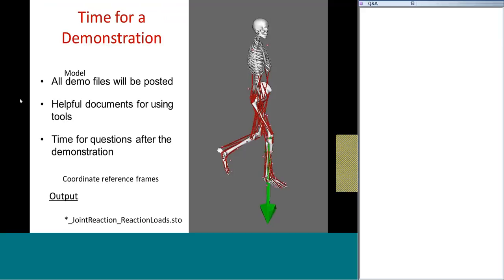I think it's time to move on with the demonstration — it's the best way to show you how to interface with joint reaction analysis. Before I start, I want to say this isn't intended as a follow-the-leader exercise. Instead, we'll post all the working files from the demo for you to reference later. We'll also be using some helpful documents with guidelines for using joint reaction analysis with static optimization and other tools. We'll post these as well, and remember we're leaving plenty of time for questions after the demo.